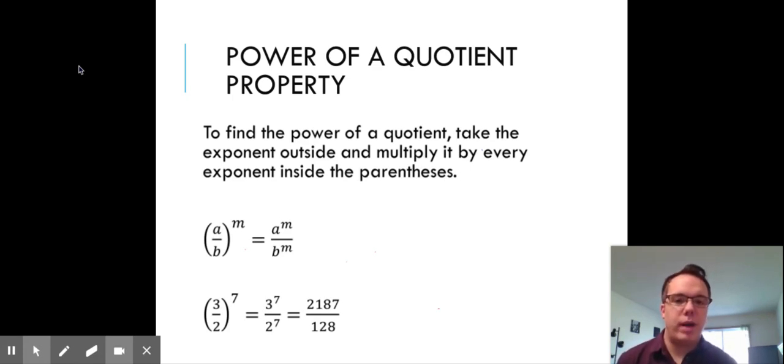So the power of a quotient property is just like our power of a power or a power of product. What it says is we take any exponent that's outside a set of parentheses and multiply it by every exponent inside. So in this case, we just have to make sure that we do it on the top of the fraction and on the bottom. So numerator and denominator.